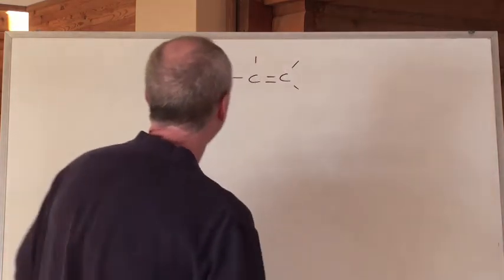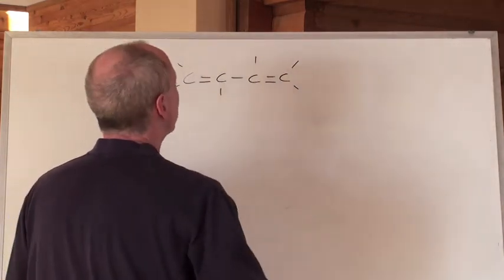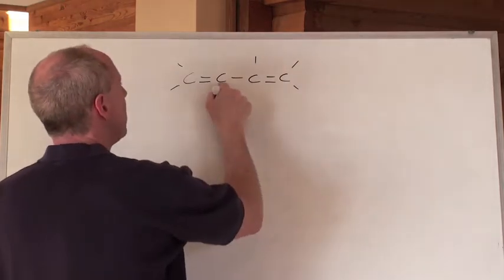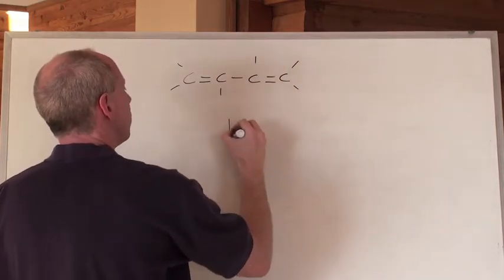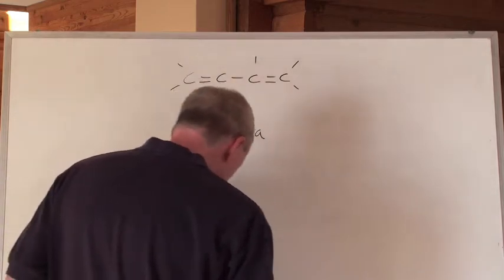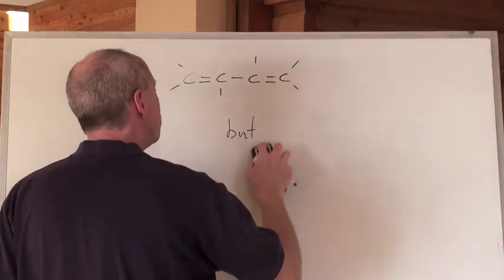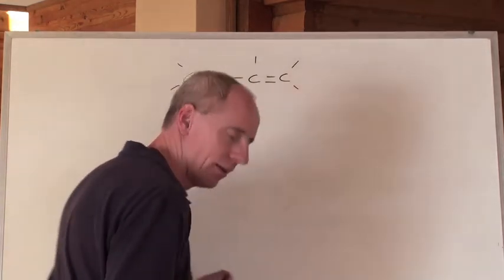You go here. If it's a multiple double bond, just look at it and go like this. How many longest continuous chain? Four. It's butte. Or, well, it's buta. Well, it's butte. Okay, now I'll show you what I'm doing here.